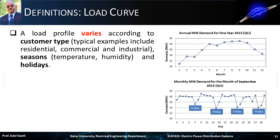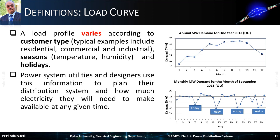A load profile varies according to customer type; typical examples include residential, commercial, and industrial. It also varies with seasons because of the effect of temperature and humidity. Finally, it varies depending on working days or holidays. Power system utilities and designers use this information to plan their distribution system and estimate how much electricity they will need to make available at any given time.